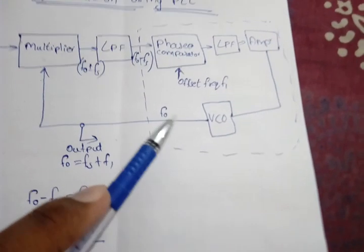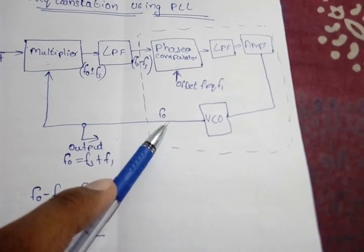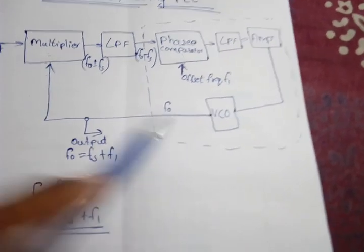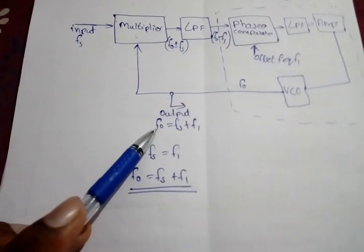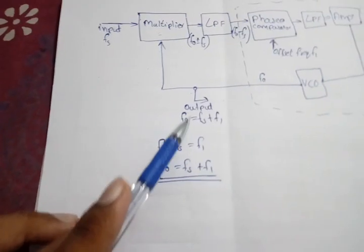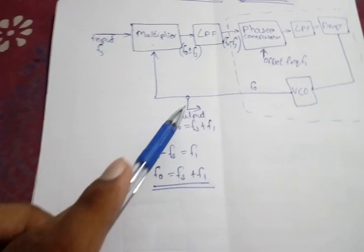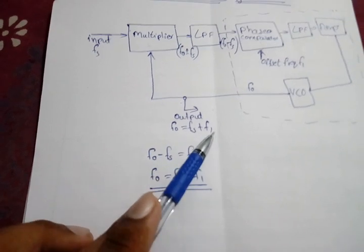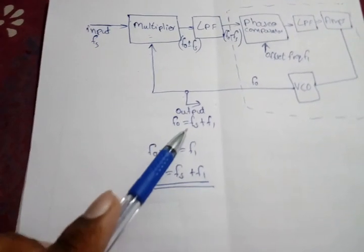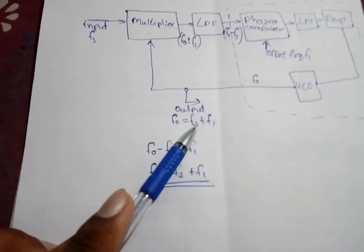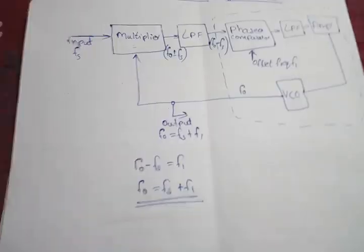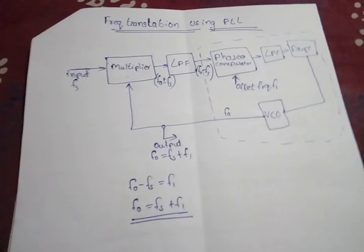F0 is the output frequency. Thus we can take the output here, and the output will be equal to F0 equals FS plus F1. Thus the input frequency FS is translated to FS plus F1. This is how frequency translation is done using PLL.